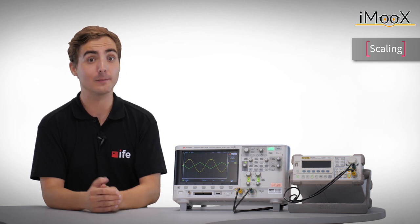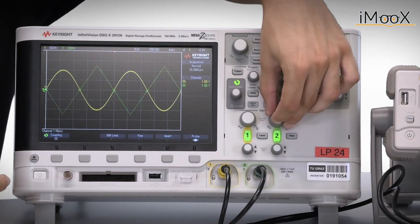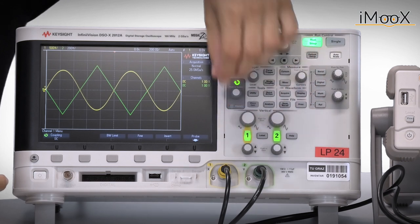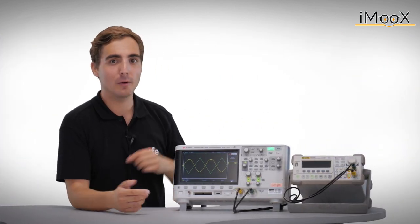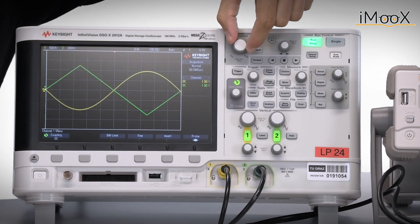However, the mentioned scale is not fixed. The voltage axis can be changed by the vertical scale control knobs for each channel separately. As you see, also the volts per division have changed accordingly. The time axis is common for both channels. It can be changed by the horizontal scale knob.